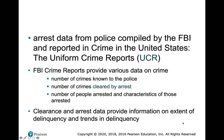The UCR is arrest data compiled from police agencies that report on a monthly basis. It provides the number of crimes known to the police, the number of crimes cleared by arrest, the number of people arrested, and characteristics of those arrested. Clearance means a crime is considered solved. It also provides information on the extent of delinquency and trends in delinquency.